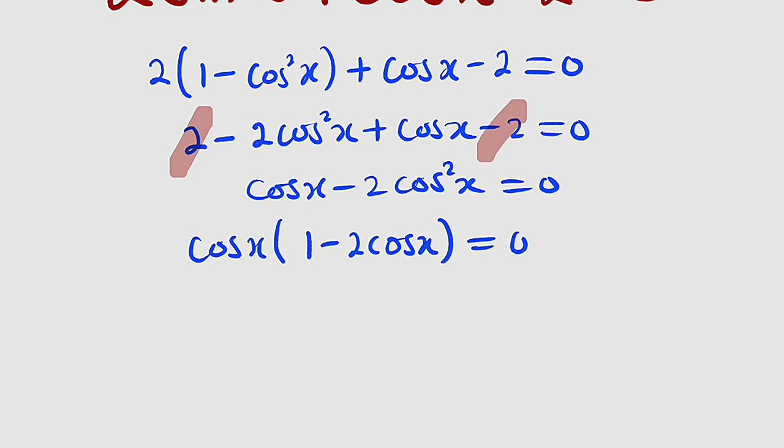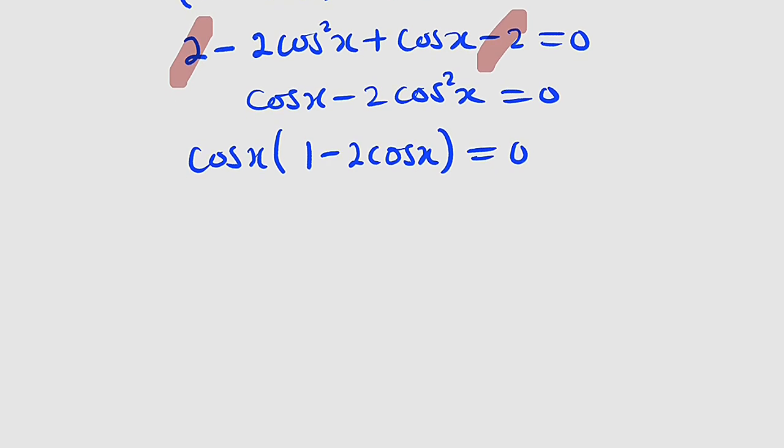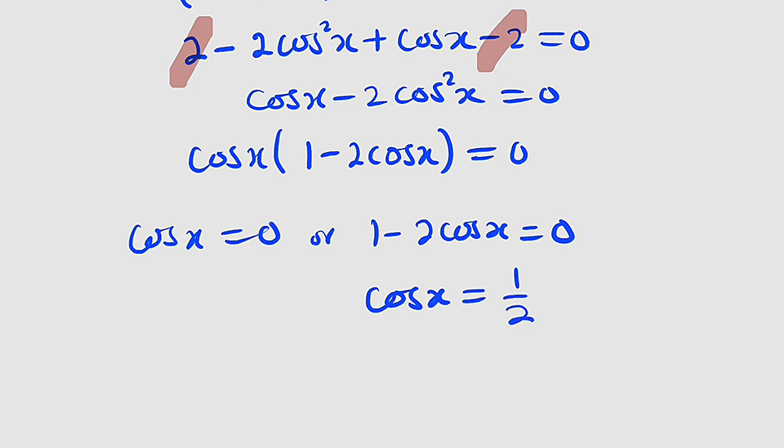Now that we have two factors multiplying each other and the result is 0, it implies either cosine x equal to 0 or 1 minus 2 cosine x equal to 0. And this equation can be written in terms of cosine x. That is cosine x equal to 1 divided by 2. If you take 2 cosine x to the right hand side, it becomes positive, then you divide both sides by 2. So either cosine x equal to 0 or cosine x equal to 1 divided by 2.